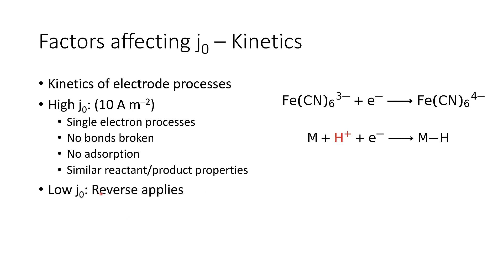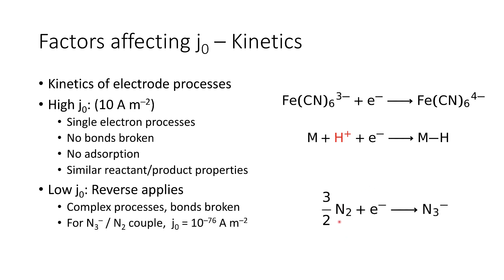If we consider a low exchange current density, the reverse applies. If we have a very complex process with lots of things going on at once, or if we have to break a chemical bond, or if we have to adsorb onto the surface, these are factors that would favour a low exchange current density. An example is the azide-nitrogen couple picking up an electron — the exchange current density is absolutely minuscule, because the strength of the nitrogen bond makes it extremely difficult to drive that process forward.